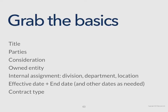The first thing to do is to get the basics from the contract. This sounds simple, but it's often not done and people don't know what the basics are. The basics are things like the title of the contract — a summary title or the words at the top of the document. You also need to capture the parties to the contract: who is bound by this? And by this, I mean not just the other party's name, but the legal name of your organization.